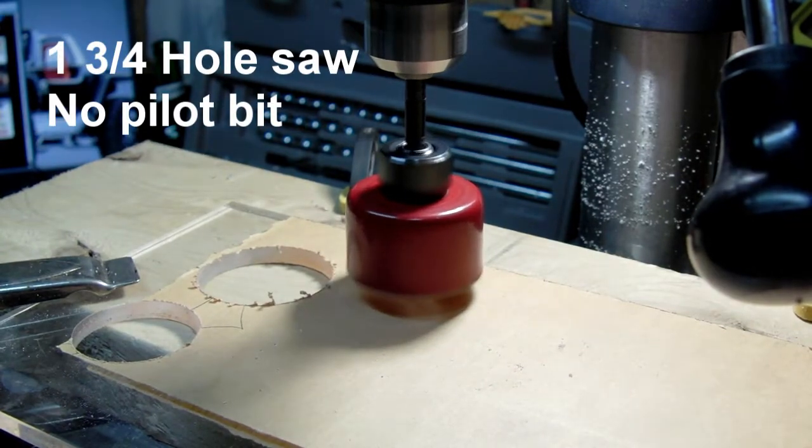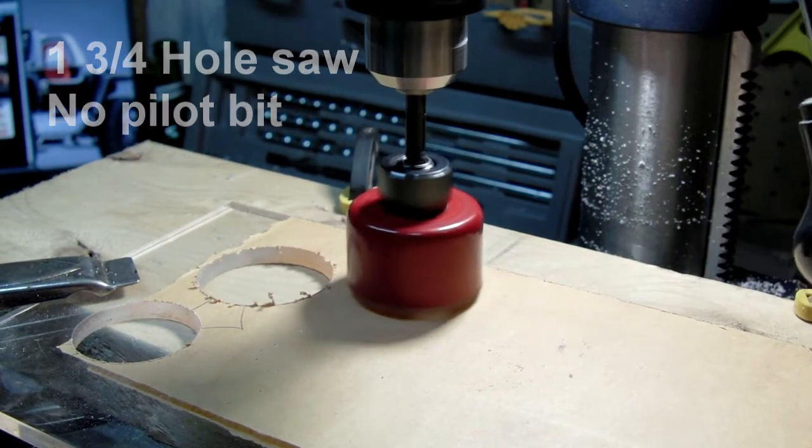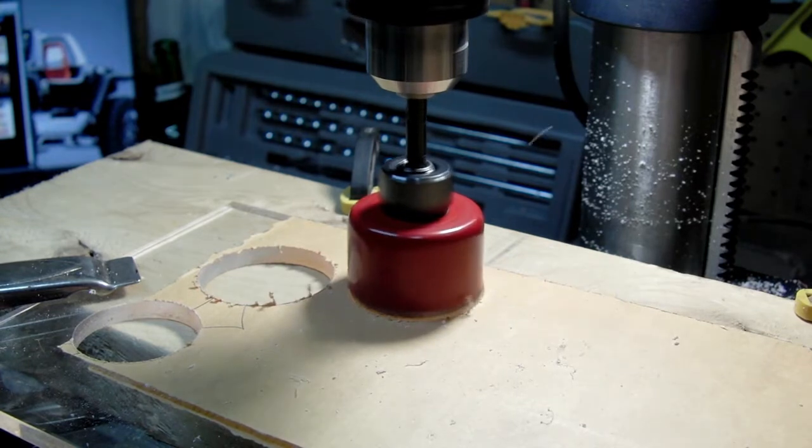Using the same hole saw but without a pilot bit, we're going to cut the lens out of the thicker clear sheet of plastic.